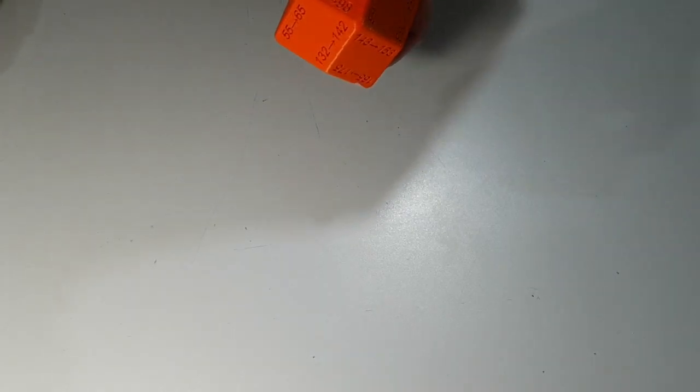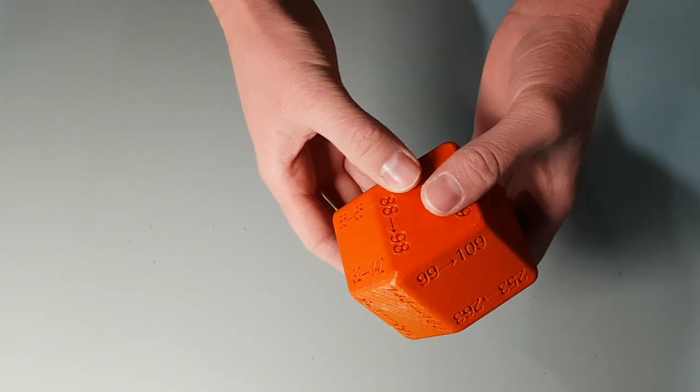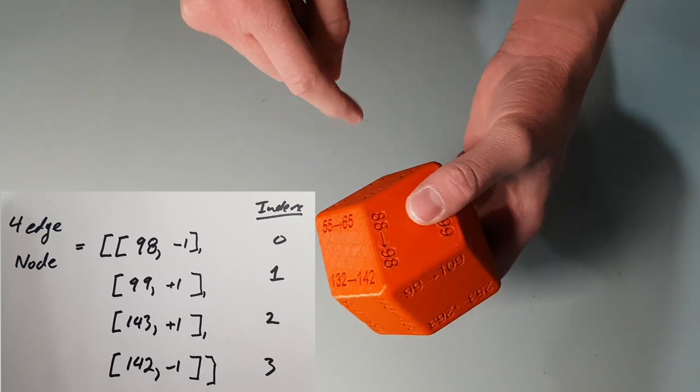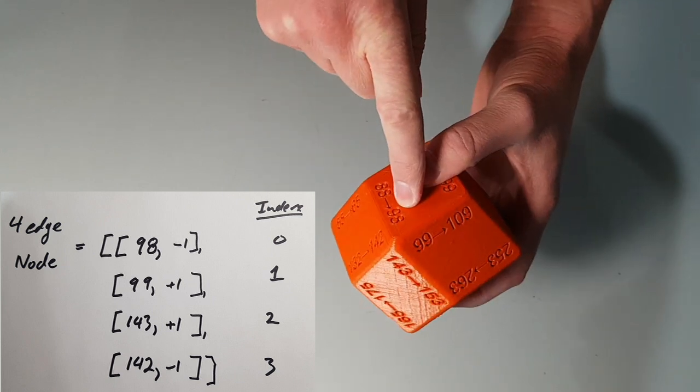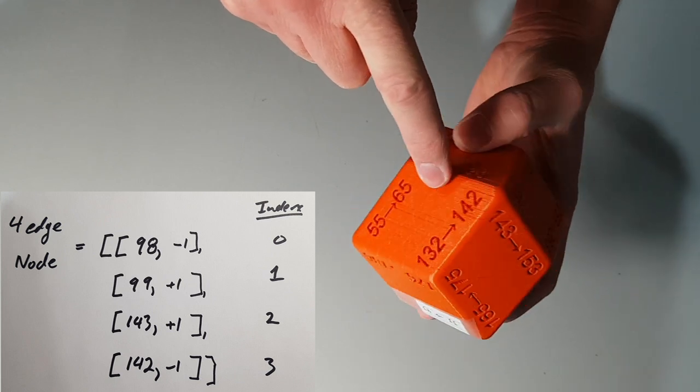The 4 edge node is very similar to the 3 edge node, only now the streak of light can go straight through. First, let's create the array for this node. The process is the same: pick an LED number, 98 in this case, and then go clockwise around the node. 98, 99, 143, 142.